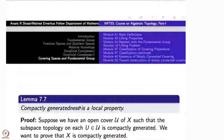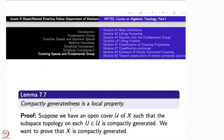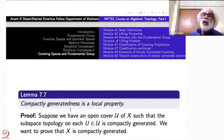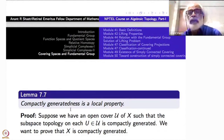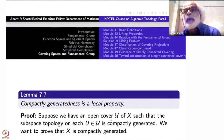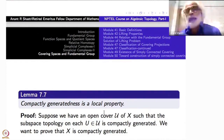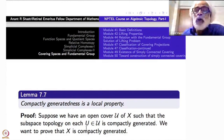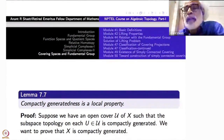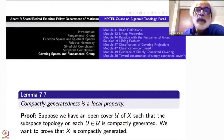The first thing we prove here is that compactly generatedness is a local property. What is the meaning of local property? Each point has a neighborhood such that the given property holds — or equivalently, you have an open cover such that on each member of this open cover the property is true. So suppose you have an open cover U such that the subspace topology on each U in U is compactly generated. Then I want to say that X is compactly generated.